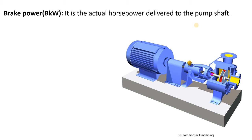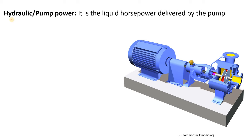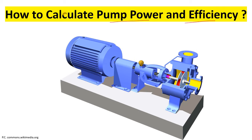First of all, we will discuss about brake power — also written as BKW. Sometimes if you have seen a pump data sheet, you will see that in the technical offer the vendor mentions this unit, BKW, or brake horsepower. We will also discuss hydraulic pump power, which is also known as pump output power, as well as pump efficiency. At the end, we will take one example to calculate pump power and efficiency.